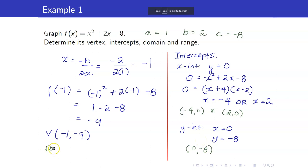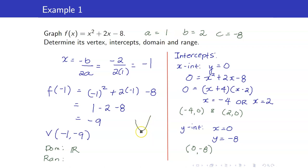For the domain, it's the set of all real numbers. For the range, even before graphing, notice that our graph is opening upwards because a is positive. The vertex is at (negative 1, negative 9), so the range is all y such that y is greater than or equal to negative 9.